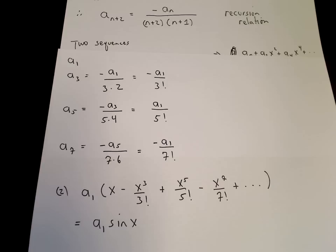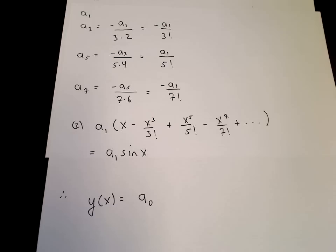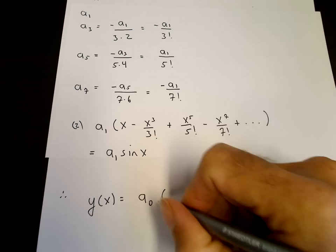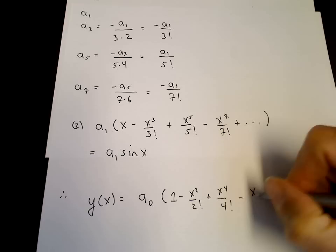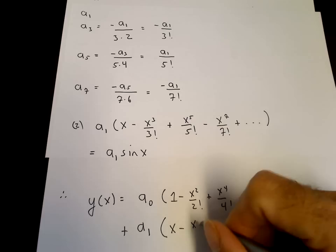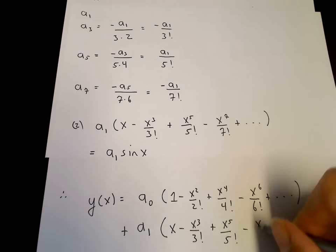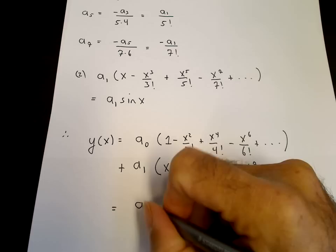So we've determined two independent power series solutions for y. The first, proportional to a₀, is the even series 1 minus x squared over 2 factorial plus x to the 4th over 4 factorial minus x to the 6th over 6 factorial. The second, proportional to a₁, is the odd series x minus x cubed over 3 factorial plus x to the 5th over 5 factorial minus x to the 7th over 7 factorial. These are our two power series solutions with two free constants, and since we know the solution, this is a₀ cosine x plus a₁ sine x.